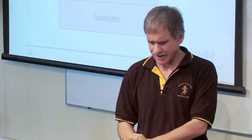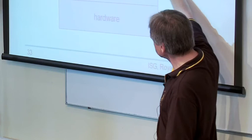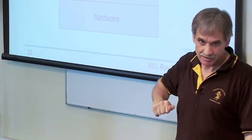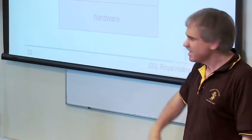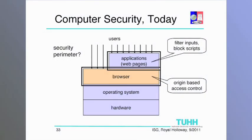Computer security today. You remember, in the past, this was the security perimeter. The browser probably already in application, at least in the early times with the early understanding of the web. Where is the security perimeter now? Is it around the browser? Is it in the web page? But it's definitely no longer down here.